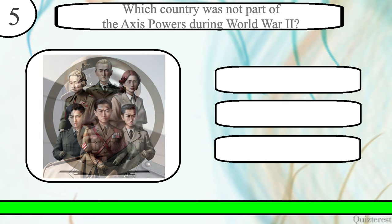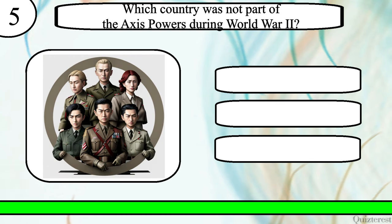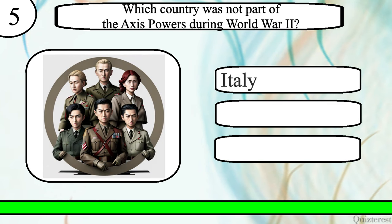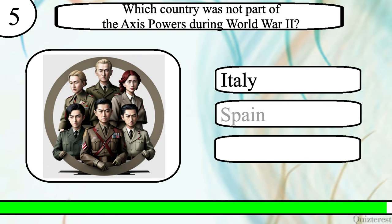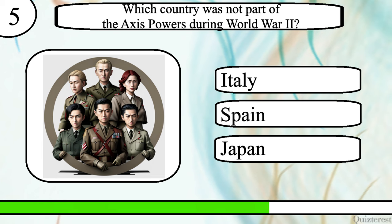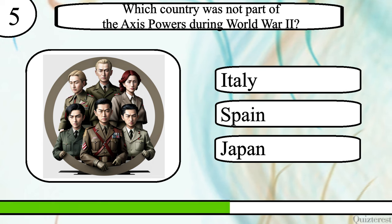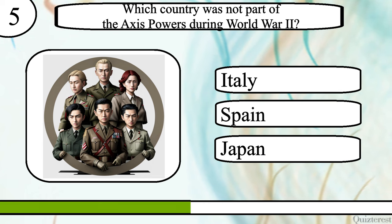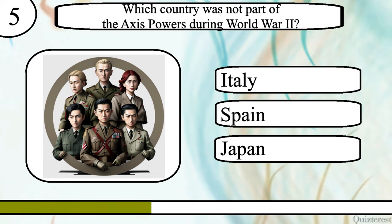Question 5. Which country was not part of the Axis powers during World War II? Italy, Spain, or Japan?